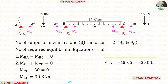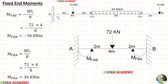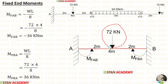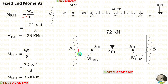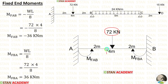Now, let us calculate the fixed end moments. First, for span AB: we assume span AB is a separate fixed beam with a central point load of 72 kN and length 4 m. The formulas are MfAB equals minus WL/8 and MfBA equals plus WL/8. Applying the values, we get MfAB and MfBA.